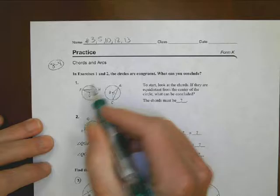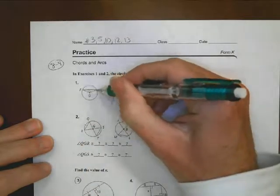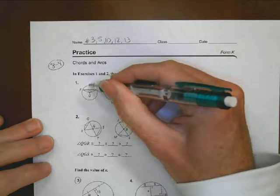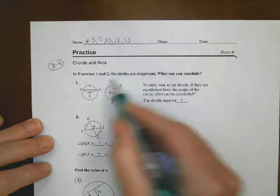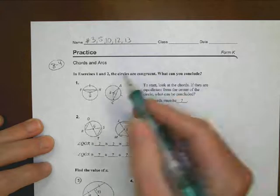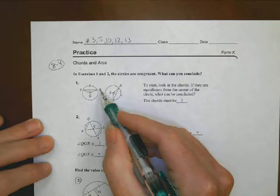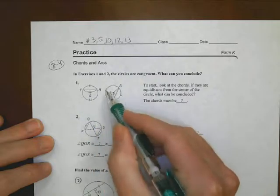So for example, if I looked at number 1, I might say that FH, this chord here, I'm going to mark it with just a one hash, is congruent to AC, and that's because the circles are congruent, I can find some matching parts. As a result of that, I can also then say that the other part around this direction, I can put two hashes, is congruent to that half over there as well.